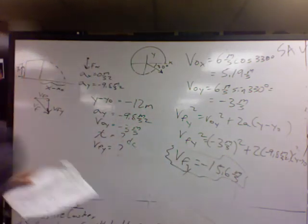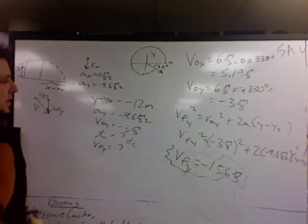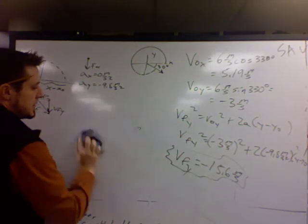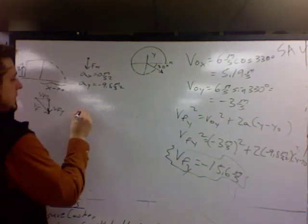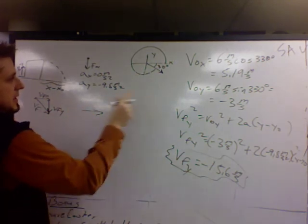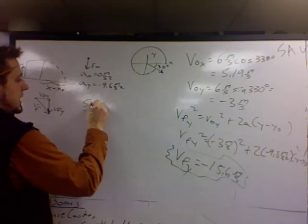Now what we need to do is figure out what v final is. So we've got v final and the x. The x part is 5.19. That never changed for the whole trip. There's no acceleration.